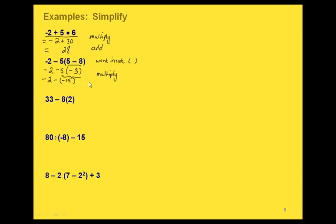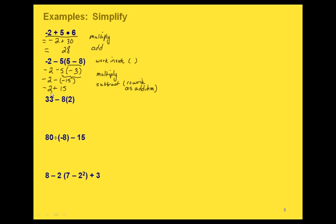Finally, we can do the subtraction. We're going to rewrite that as an addition, so we have negative 2 plus the opposite of negative 15, which is 15. And that gives us a final answer of positive 13.